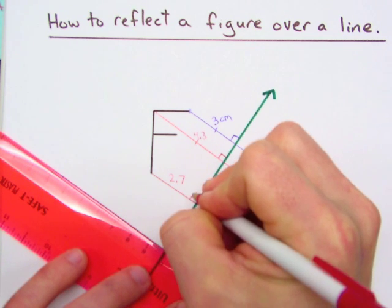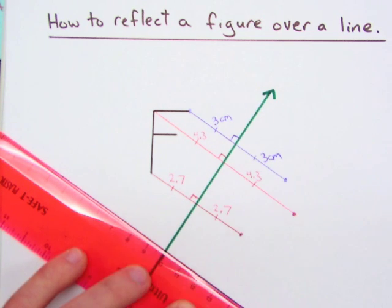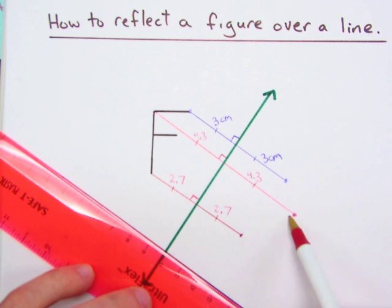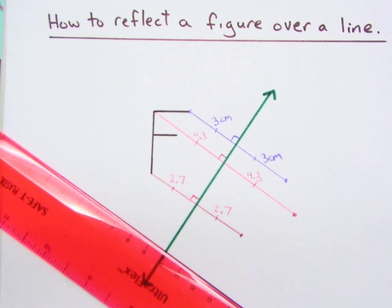And so I also have a line of reflection as a perpendicular bisector of this segment. And you can see the shape of our reflected F is starting to appear there.